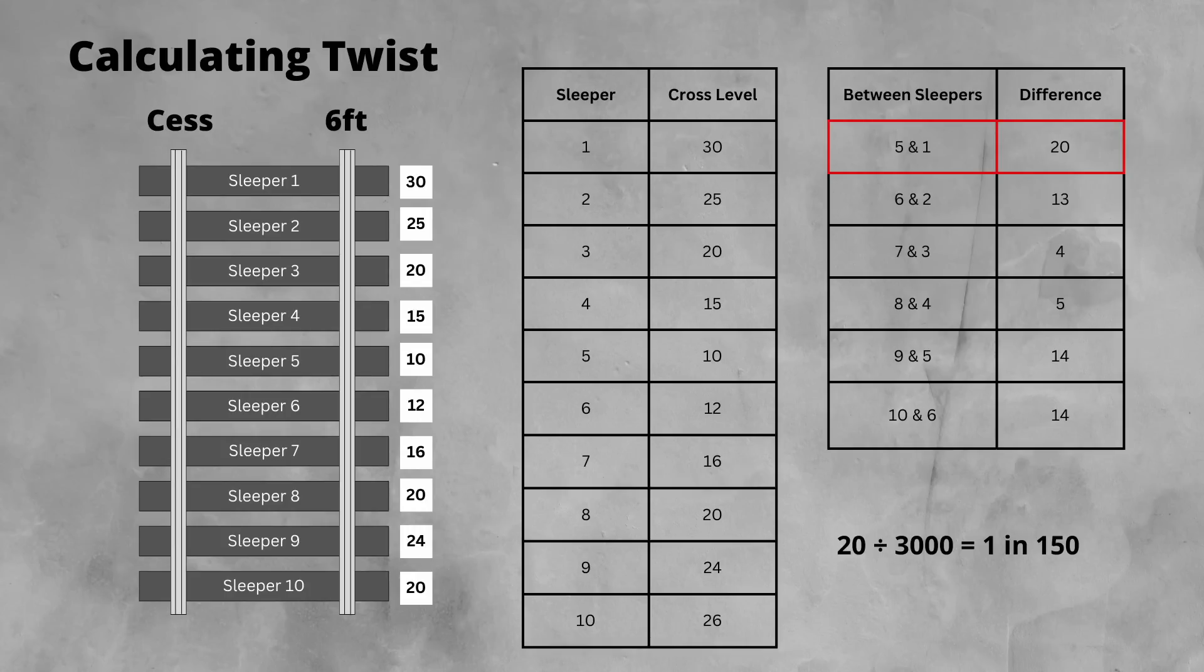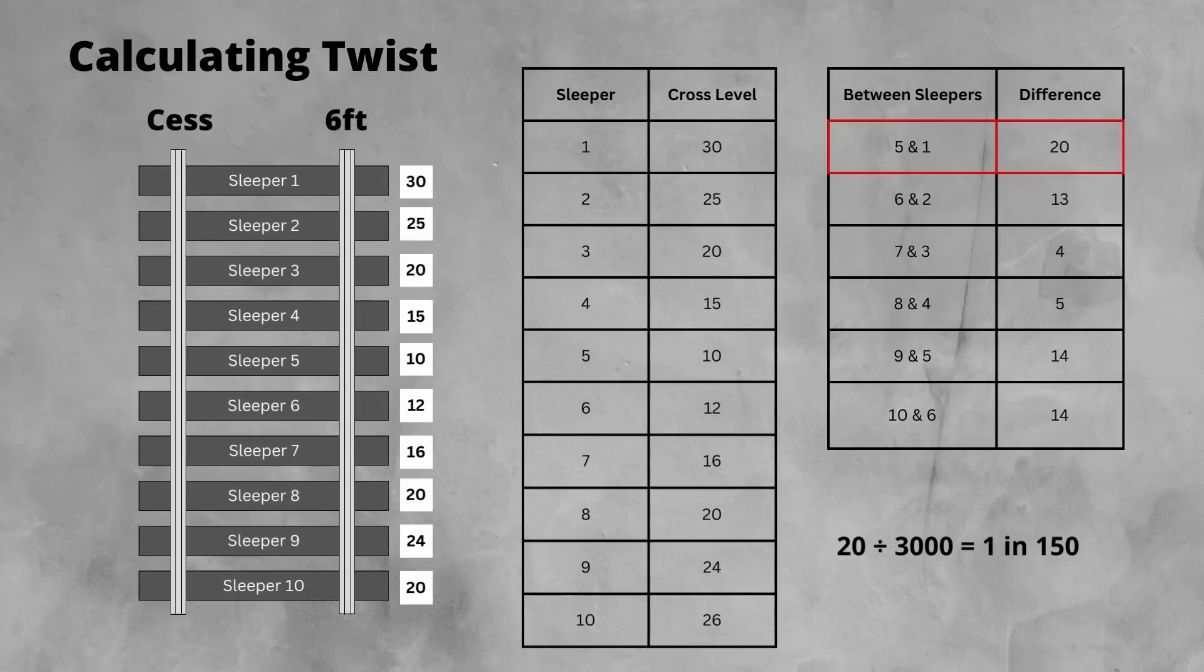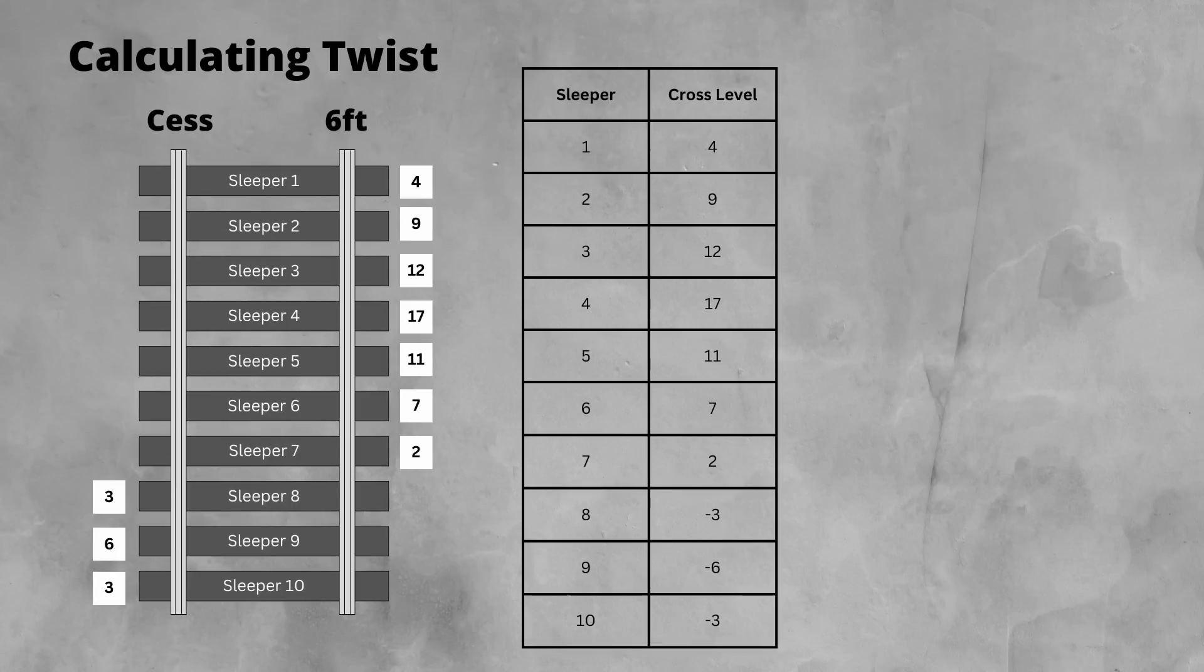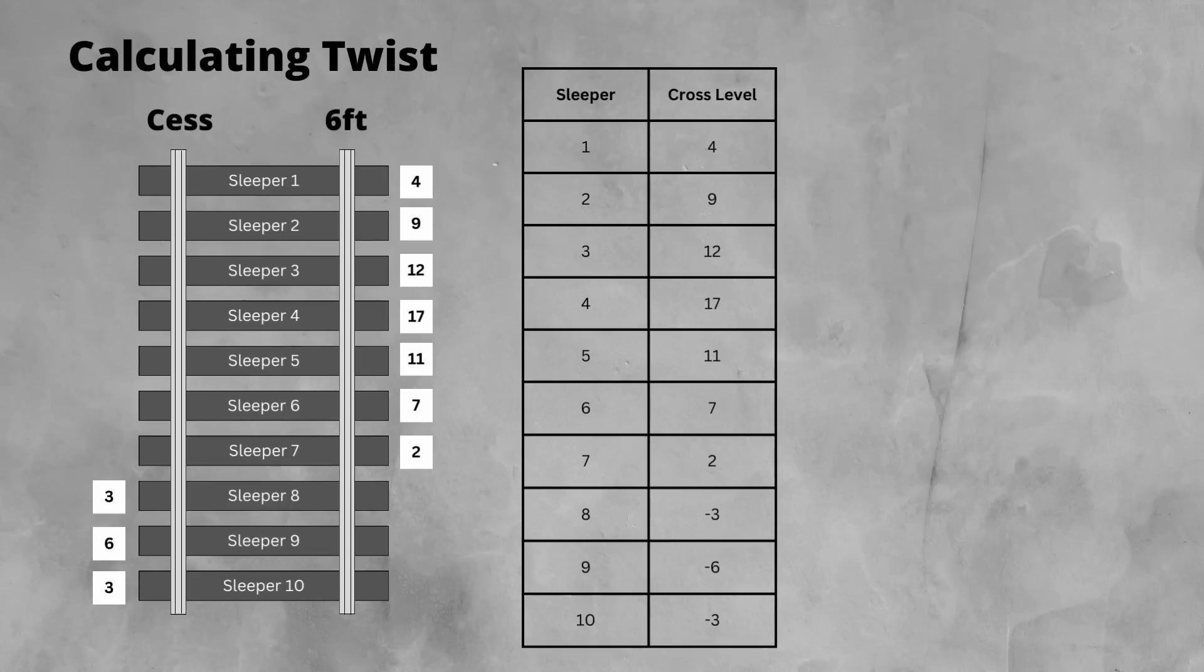What happens when the high rail changes? If the cross level difference is on the opposite rail. Let's put some values in our diagram for our track link. We can see on sleepers 1 to 7, the 6 foot rail is still our high rail. However, on sleepers 8 to 10, the cess rail is higher.